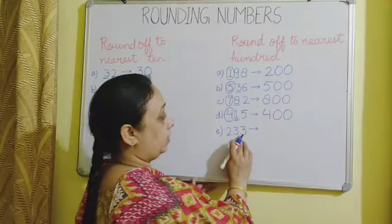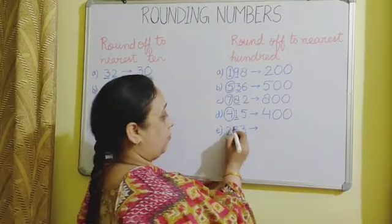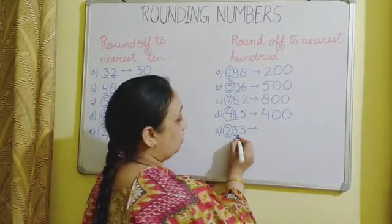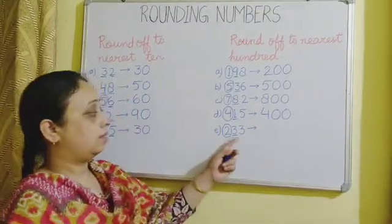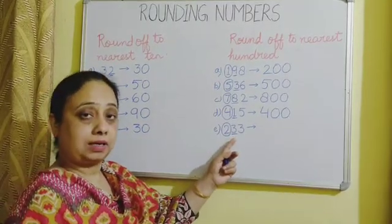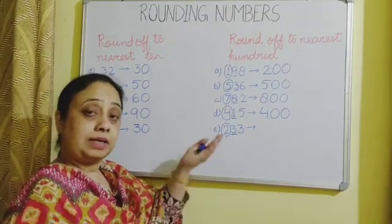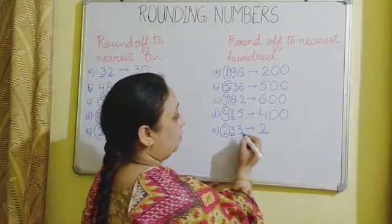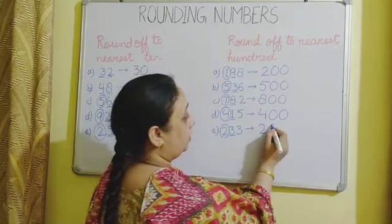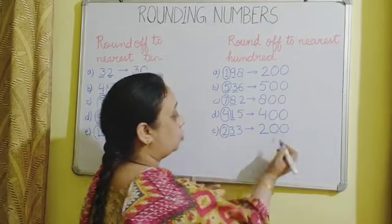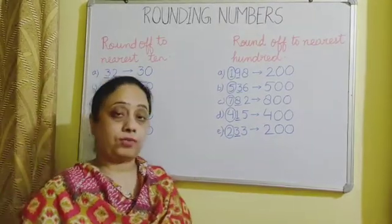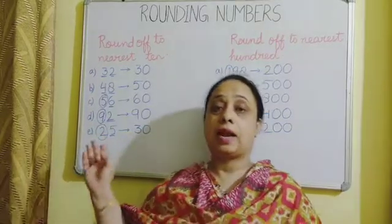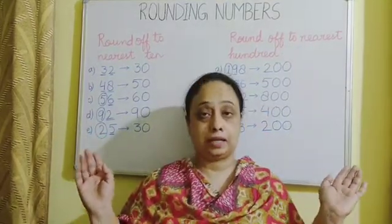Then we have the last number, 233. We have to find the 100's number to round off. Then we have to look to the right next door — in the 10's place, we have the digit 3. This 3 is less than 5, so 2 will remain unchanged. And in place of both the 3's, we will write two zeros. Therefore, 233 is rounded off to 200. I think rounding off to nearest 10 and rounding off to nearest 100 is clear to you.